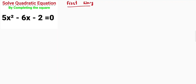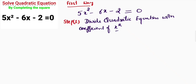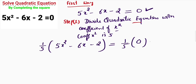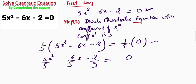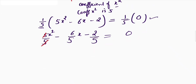The first way: first let me write my quadratic equation. The first step is to divide the quadratic equation with the coefficient of x square. In this equation the coefficient of x square is 5, so I will divide this whole equation with 5. So here I have written this — we can write it like this. I will take this inside: divided by 5, minus 6 divided by 5 x, minus 2 divided by 5, and here I will get 0. This 5 will get cancelled.